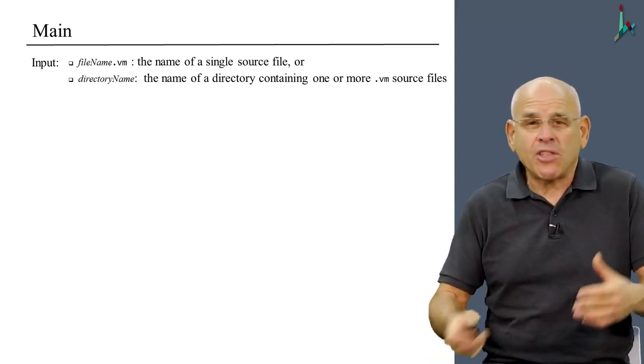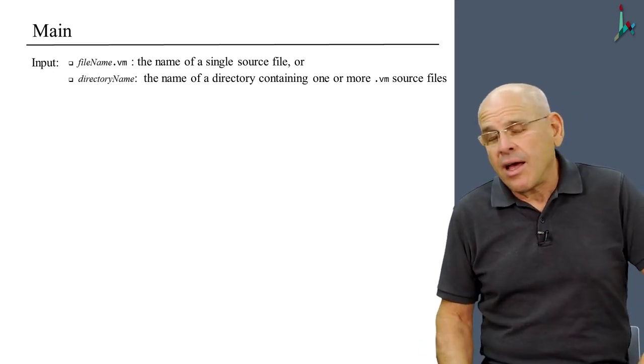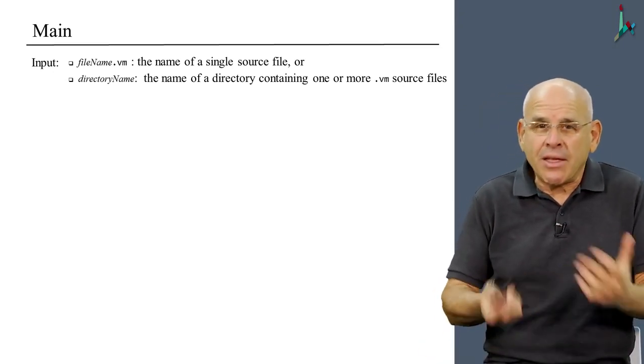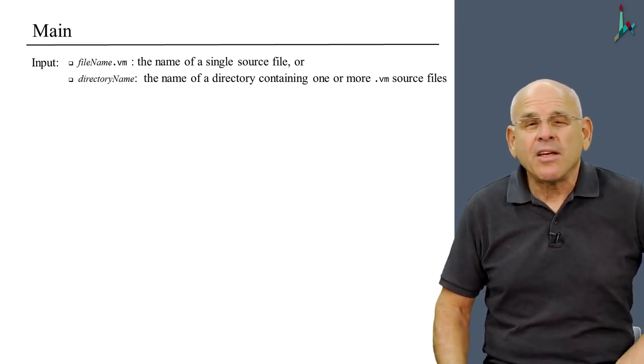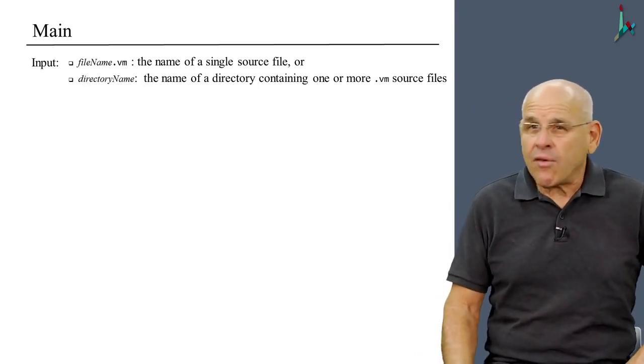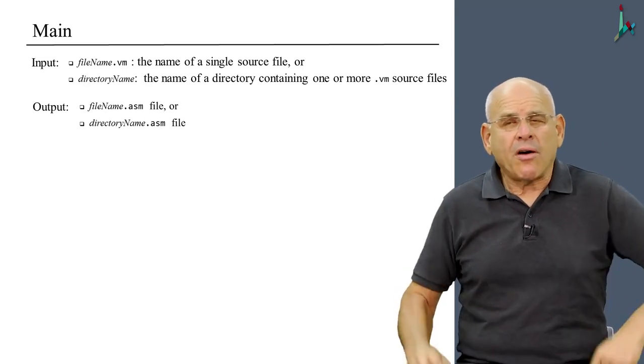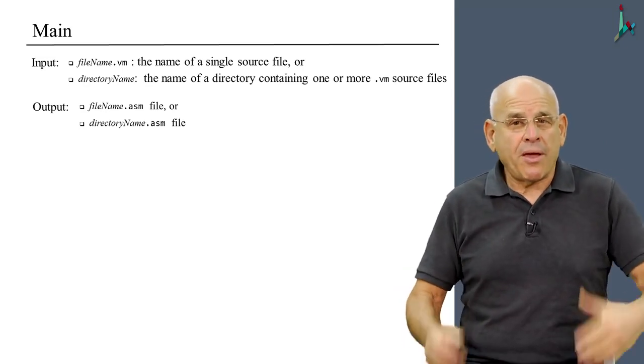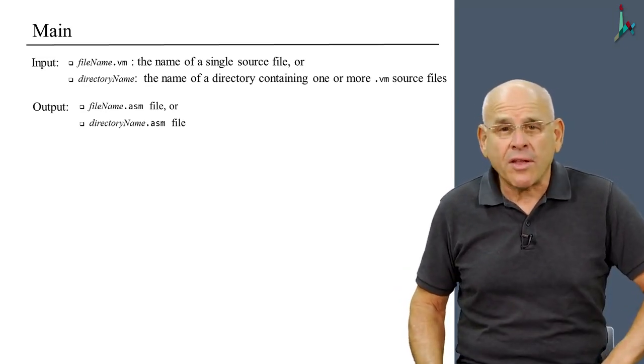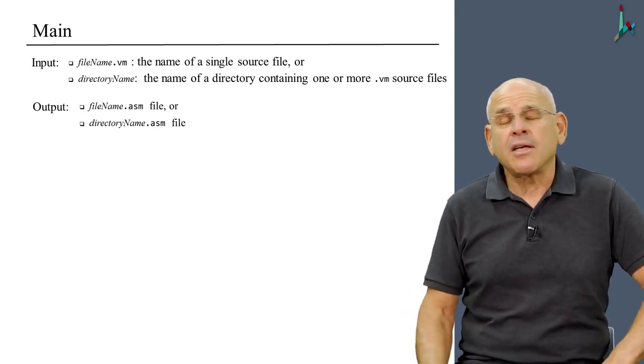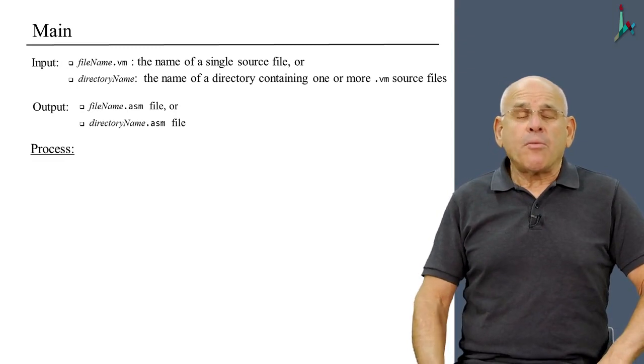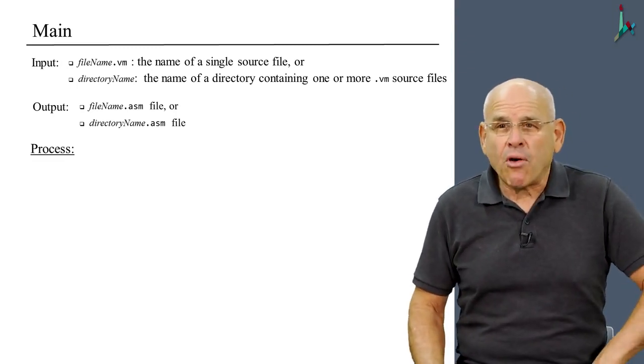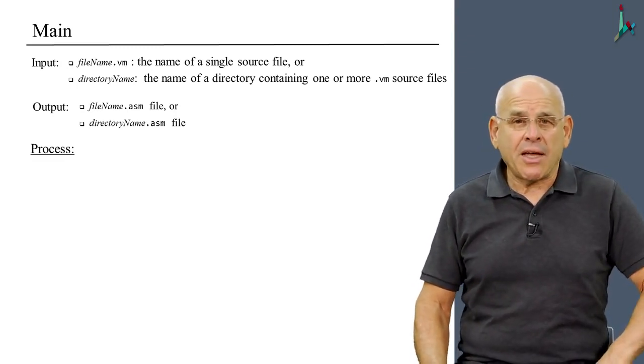And if you use a language like Java or Python, there are capabilities in these languages to decide if a certain string stands for a single file or a directory. The output of the program should be a filename, a .asm file, that contains the assembly code that we are going to generate. The process that the main program is going to carry out is the following.